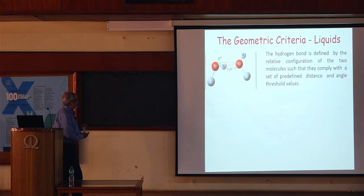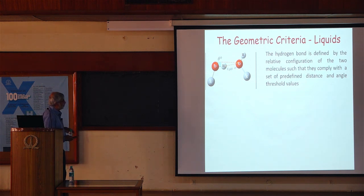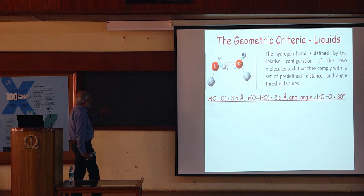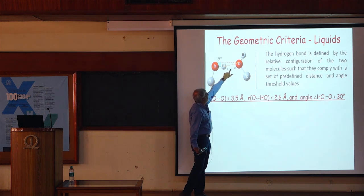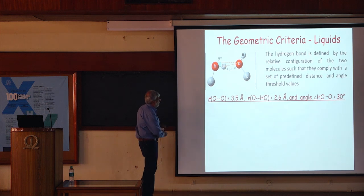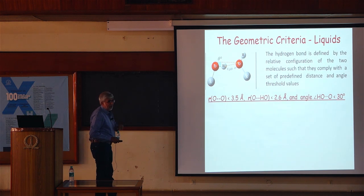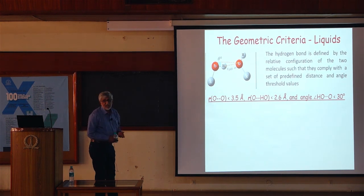What is this geometric criteria? It says that the hydrogen bond is defined by the relative configuration of two molecules. As long as certain critical distances and angles comply within a predefined set of distance-angle threshold values, we say that there is a hydrogen bond. For the alcohols, we look at the O–O distance and the H–O–O angle.